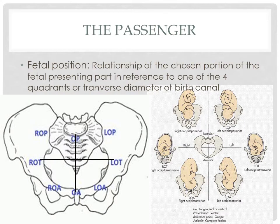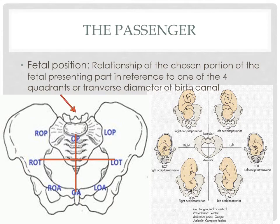Fetal position is the relationship of the chosen portion of the fetal presenting part in reference to one of the four quadrants or transverse diameter of the birth canal. To determine fetal position, first draw an imaginary cross in the pelvic cavity. Then determine which is anterior, posterior, maternal left, and maternal right based on anatomical landmarks. Posterior is where the sacrum is; anterior is where the symphysis pubis is.